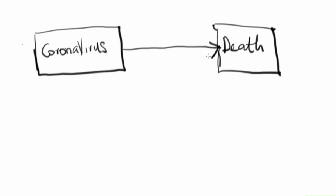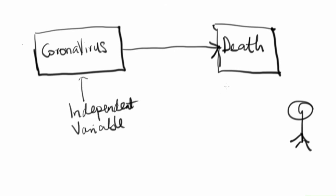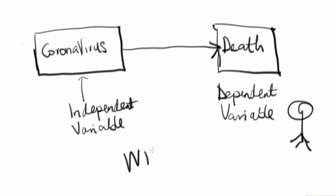Coronavirus leads to death — that's what this relationship is saying. So if you have coronavirus, you will die. Now, coronavirus is the independent variable because it does not depend on death to exist. Coronavirus does not depend on anything to exist; it's just flying about looking for who to enter. The WHO has stated that it just roams around everywhere — that's why people are disinfecting their communities, using hand sanitizer, and wearing nose masks. It does not depend on anything, so it is called the independent variable.